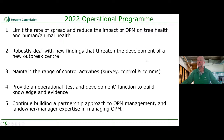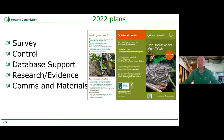There are five pillars to our work: we look for OPM — which pretty much goes on all year — we run a control program mostly through spraying Bacillus thuringiensis, we have a data programme supported by a contract with Southampton University, we do research and evidence gathering, and we produce communications and materials to support the program.